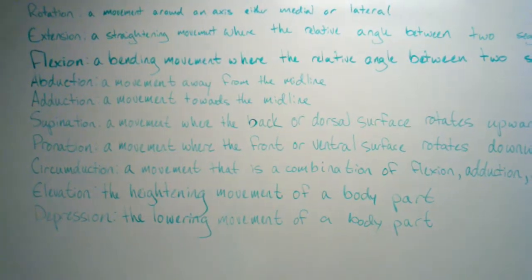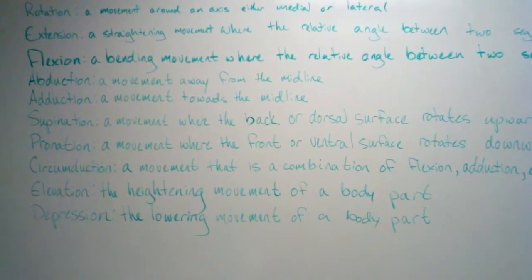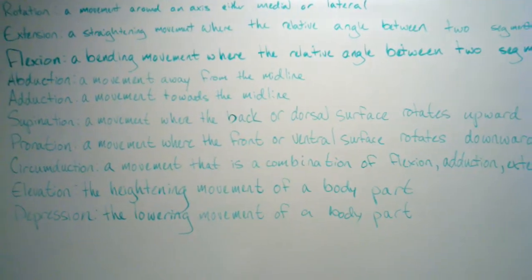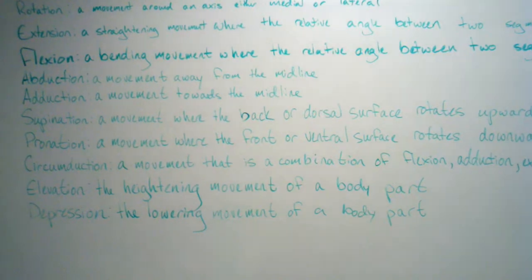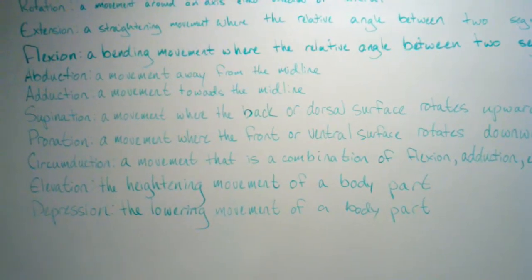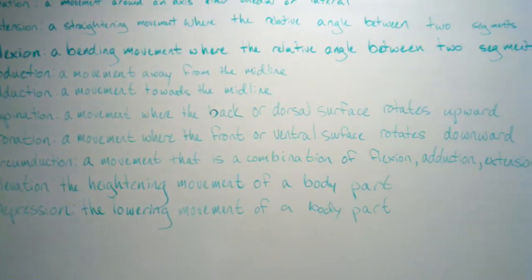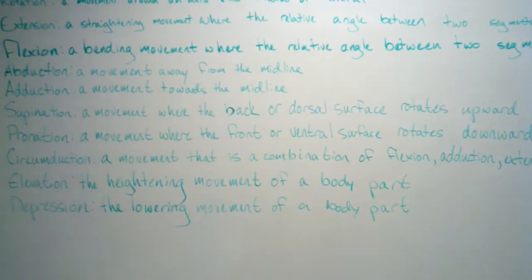Supination is a movement where the back or dorsal surface rotates upward. Pronation is a movement where the front or ventral surface rotates downward.